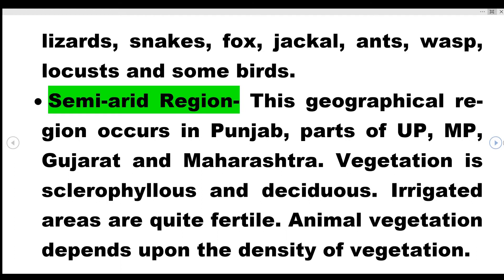The semi-arid region occurs in Punjab, parts of Uttar Pradesh, Madhya Pradesh, Gujarat, and Maharashtra. Vegetation is sclerophyllous and deciduous.